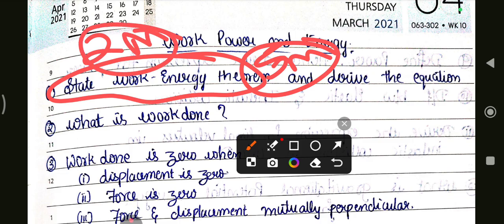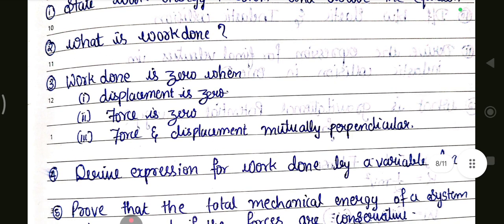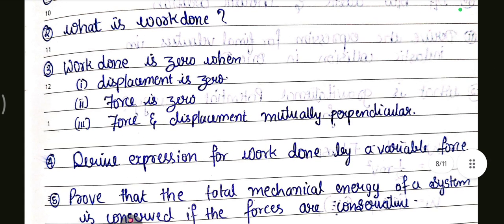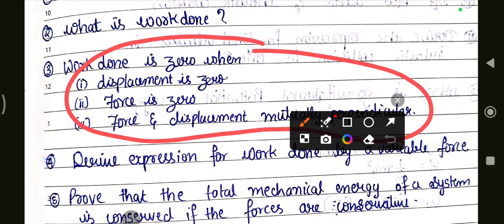This question is very important. What is work done? MCQs will write it like this: What is work done and give its equation. Next, work done is zero when displacement is zero, force is zero, or force and displacement are mutually perpendicular.